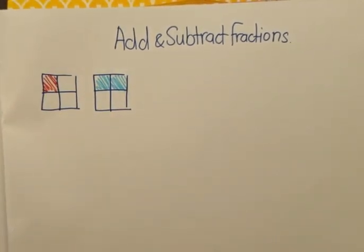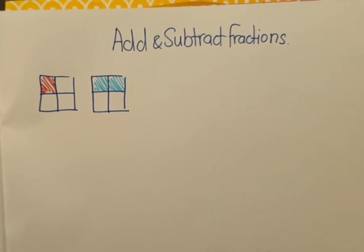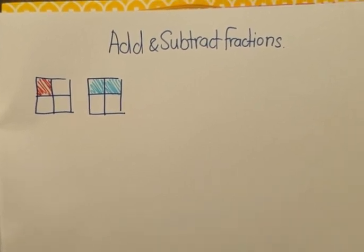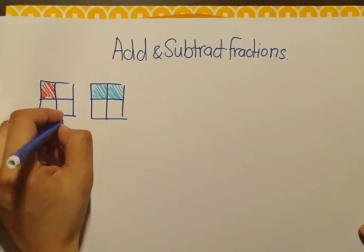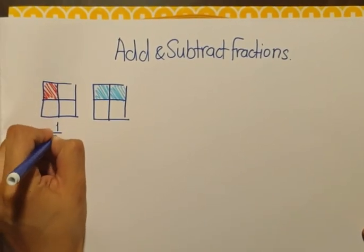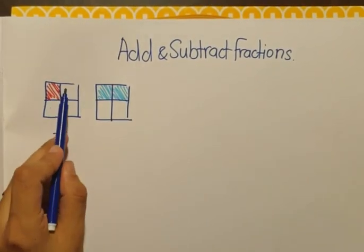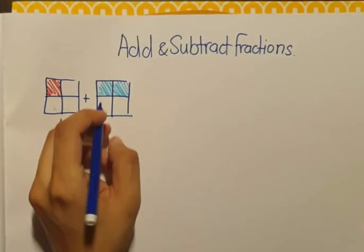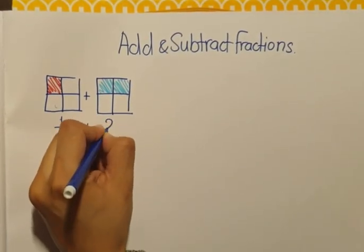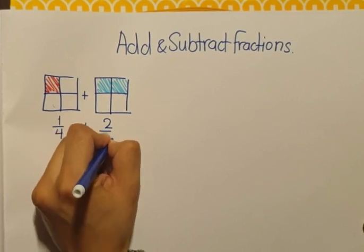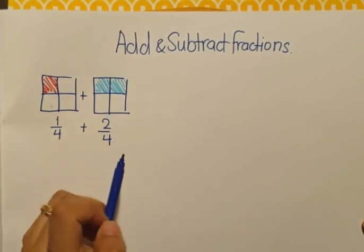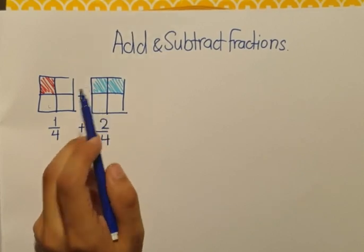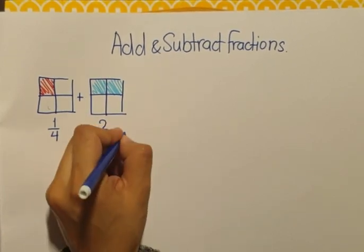So first of all, let's write these two shapes as fractions. The first one is going to be one over four since I have one part shaded and a total of four parts. And the second one is going to be two over four since I have two parts shaded and a total of four parts.